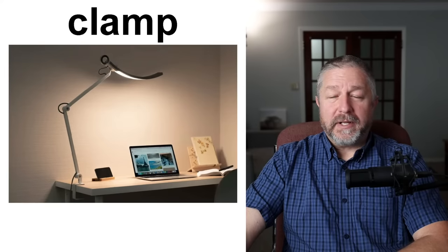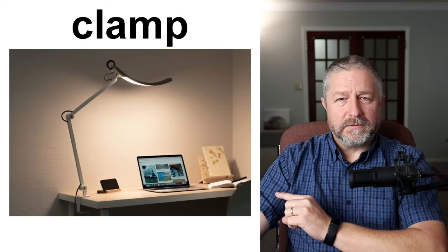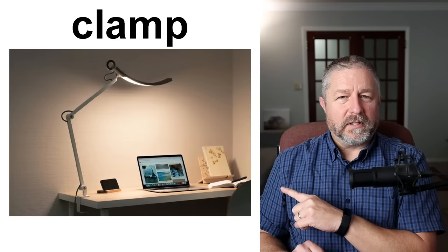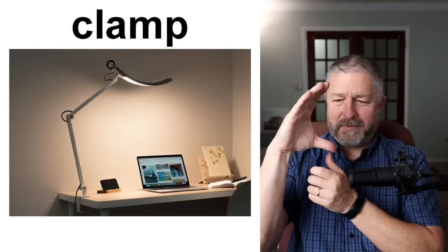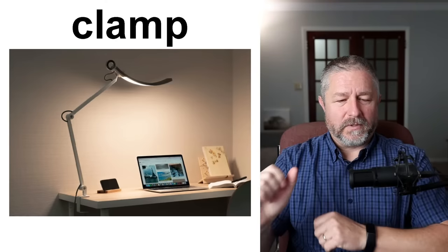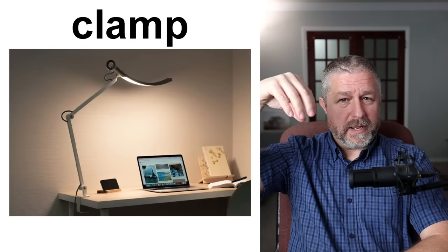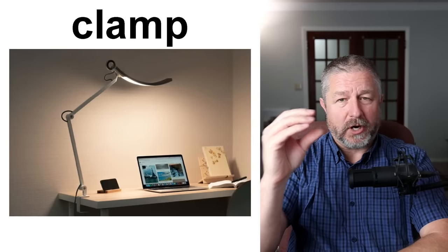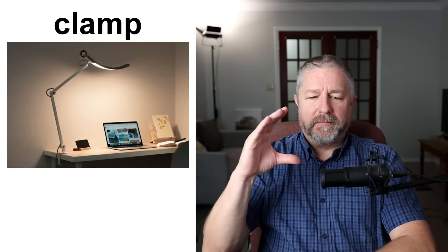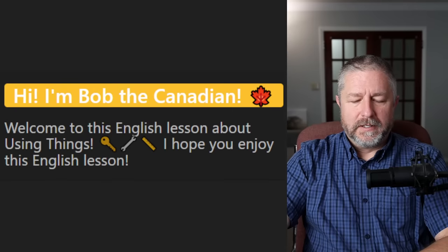Clamp. I think I talked about this verb in another lesson, but here I want to talk about things like this light — this person bought a light that they could clamp onto their desk. There's probably something to turn at the bottom. As you turn, the clamp gets tighter. When I was in university, I had a lamp that would clamp onto the headboard of my bed so I could read at night. I also have a mic that clamps onto my tripod. Clamp simply means to attach something using something we call a clamp — something with a spring or something you turn and tighten.